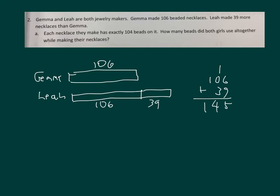Make sure to write that out. So together they make how many? 145 plus 106 is 1, 1, 5, 251 necklaces. And then it says each necklace has 104 beads on it. So you're going to take the numbers 251 and do what? Multiply it by 104. Pause the video while you do your work there.